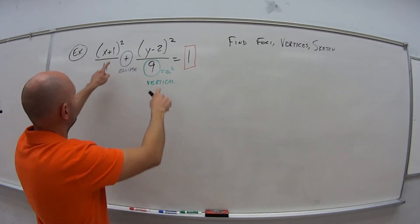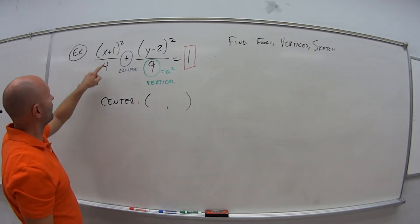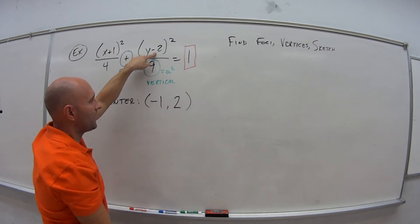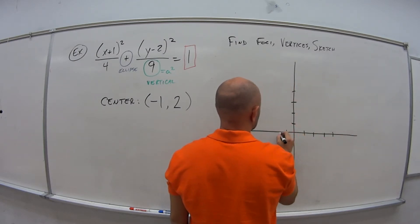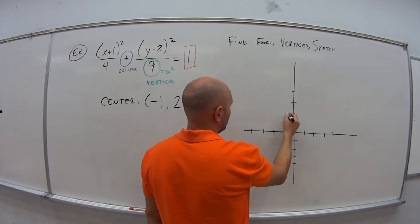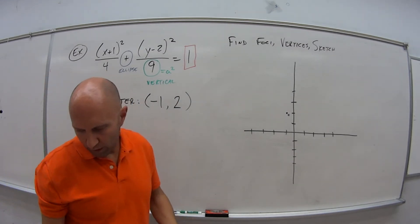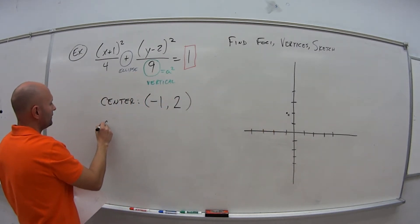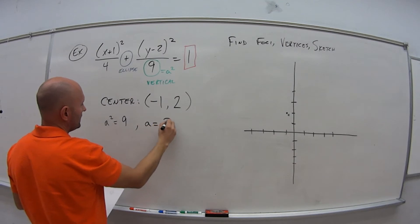This is a shifted conic — we have these parentheses. So I want to know where my center is. The center is going to be opposite of what I see. I see plus 1, so that means it's minus 1. I see minus 2, which means it's going to be positive 2. So my center is at negative 1, 2. Now for the vertices, we need our a value and our b value. a squared is 9, which means a is equal to 3.